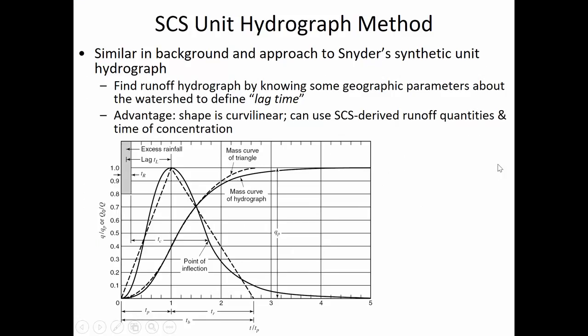Any questions about land use or soil type data? The homework I've given you today is largely based on the SCS unit hydrograph method. SCS stands for Soil Conservation Service — the old name for what's now called NRCS, National Resource Conservation Service. If you hear SCS method or NRCS method, they're largely interchangeable. You remember the Snyder synthetic unit hydrograph we looked at before — using physical parameters of a watershed to predict what the hydrograph would look like when you don't have a physically derived hydrograph. It extrapolates what the hydrograph would look like based on slope, area of the watershed, length of the flow path, and so on.